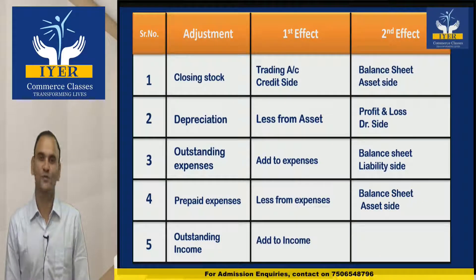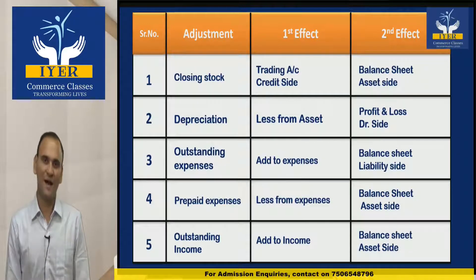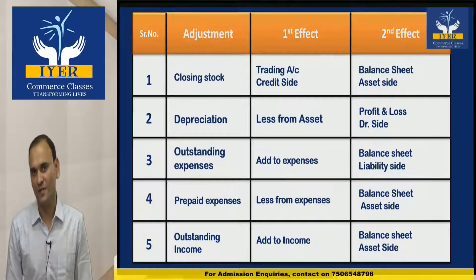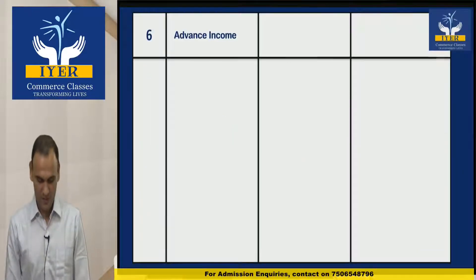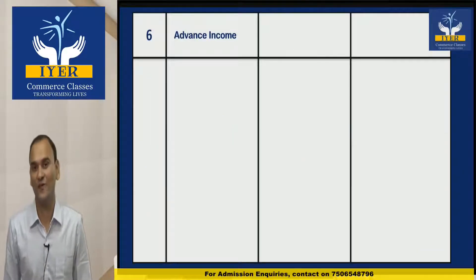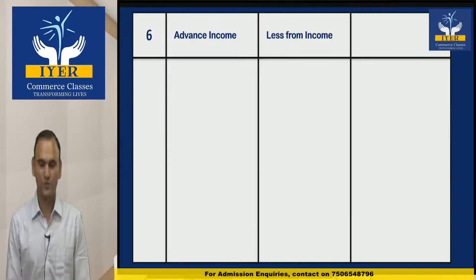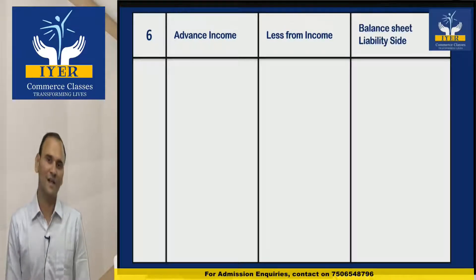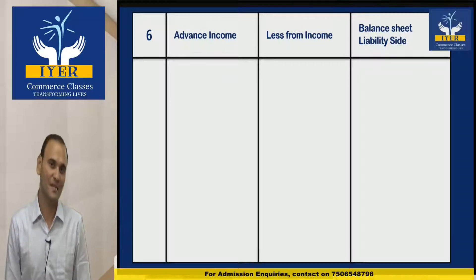The next adjustment is Outstanding Income, and the two effects are: add to income, and Balance Sheet asset side. The next adjustment is Advanced Income, and the two effects are: less from income, and Balance Sheet liability side.